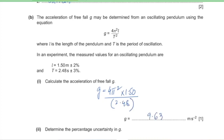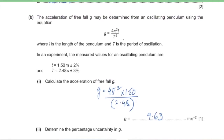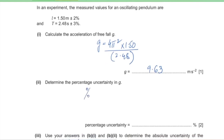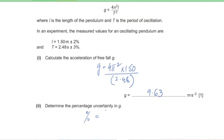That gives us g = 9.63 m/s². For the percentage uncertainty in g: since L and T appear in the formula, we add their percentage uncertainties for the number of times each is used. L is used once, while T is squared, so the percentage uncertainty for g = percentage uncertainty of L + (2 × percentage uncertainty of T) = 2 + (2 × 3) = 8%.